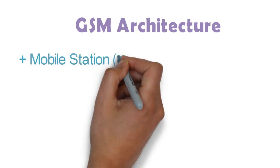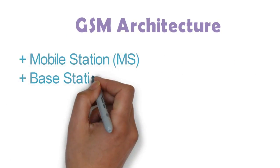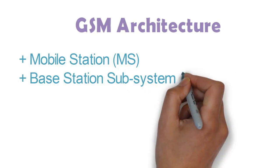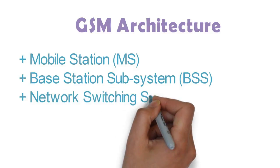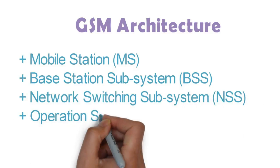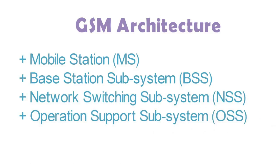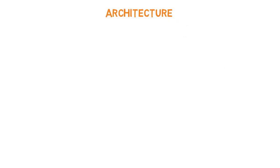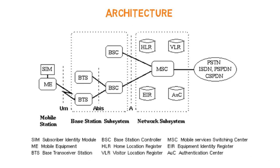GSM architecture is the basic architecture in a cellular network. It contains four subsystems: Mobile Station, Base Station Subsystem, Network Switching Subsystem, and Operation Support Subsystem. Here is the representation of each subsystem in the architecture. It is noticed that each subsystem contains some components — let's discuss in detail.